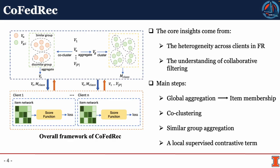To address these challenges, we propose a co-clustering mechanism, Co-FedRec, for federated recommender systems to effectively group clients. The core insights come from the heterogeneity across clients in federated recommender systems and the understanding of collaborative filtering, whose key idea is to predict the interest of a user by collecting preferences from many neighborhoods. In each round, the server first generates an atom membership upon global aggregation using k-means clustering.